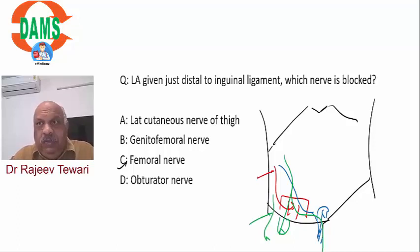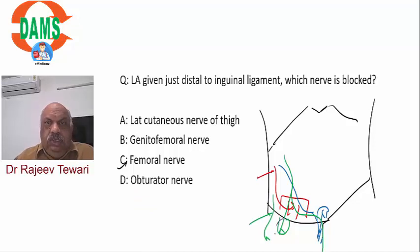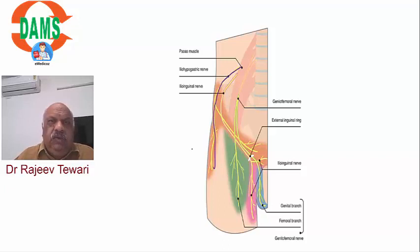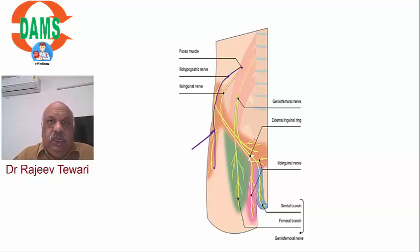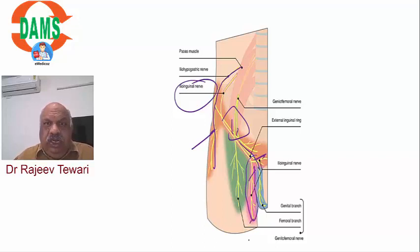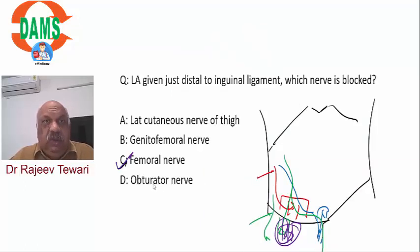Genitofemoral nerve gives a femoral branch and a genital branch which follows the cord and supplies the testis. Lateral cutaneous nerve of thigh is the most common nerve injured in laparoscopic hernia surgery, causing paresthesia or pain in the lateral aspect of the thigh. Ilioinguinal nerve is most commonly injured in open appendicectomy. Obturator nerve supplies the inner thigh area. Femoral nerve is the best answer when asked which nerve is blocked by local anesthesia near the inguinal ligament.